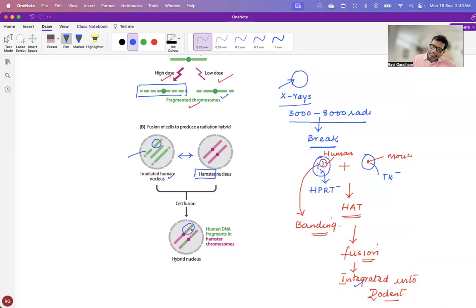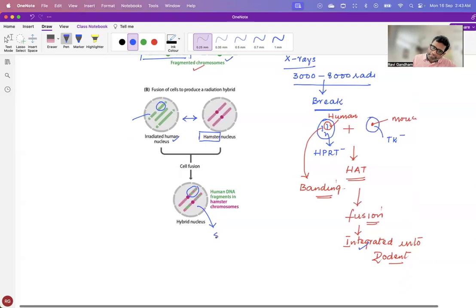And these integrated cell lines are now taken down and then used for STS mapping.